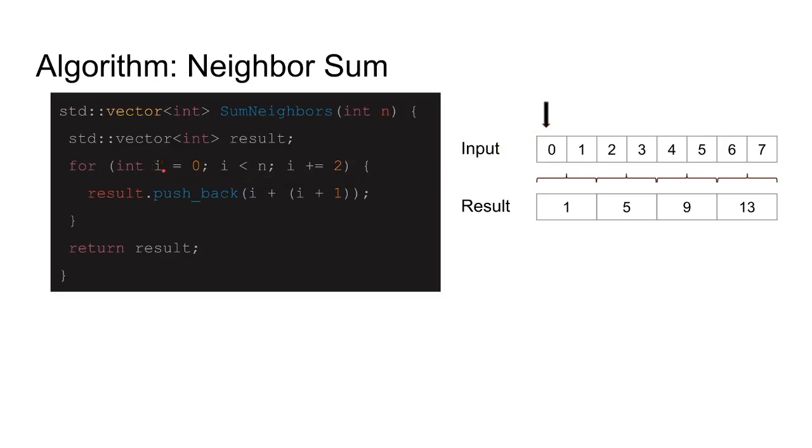We start from index 0. We have an integer index called i, and we start incrementing i from 0 all the way to the end, to n. Every time we add i by 2. So the first time i is 0, and then I calculate i plus i plus 1, which is 0 plus 1, and I push it inside my result array. In this case, 0 plus 1 is 1, and I added it here.